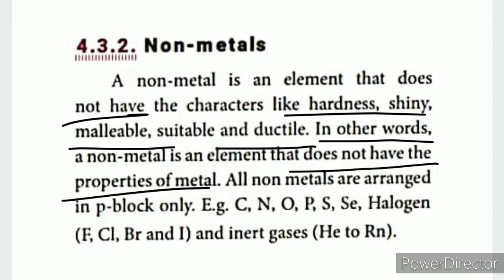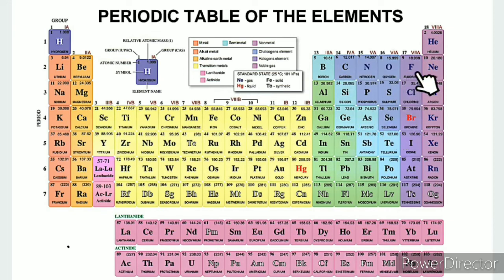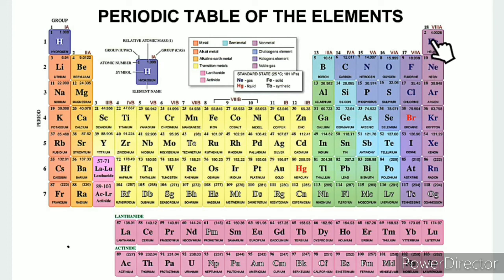The halogen group includes Fluorine, Chlorine, Bromine, and Iodine — all of which are non-metal characters. The inert gases, also called rare gases or noble gases, include Helium, Neon, Argon, Krypton, Xenon, and Radon.